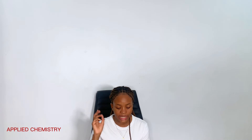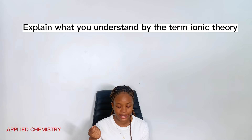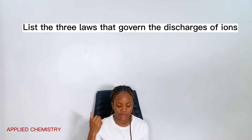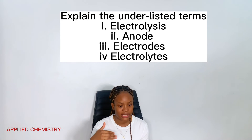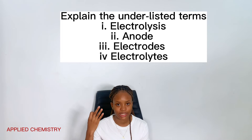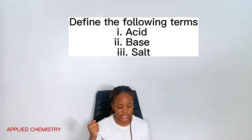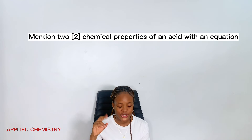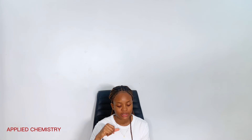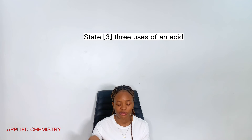Question 3A: explain what you understand by the term ionic theory. B: list the three laws that govern the discharge of ions. C: explain the following terms — electrolysis, anode, electrodes, and electrolytes. Question 4: define the following terms — acid, base, salt. Question 4B: mention two chemical properties of an acid with an equation. C: state three uses of an acid.